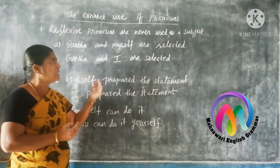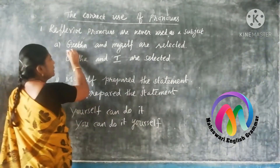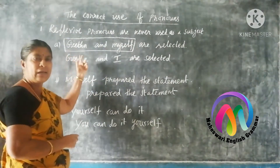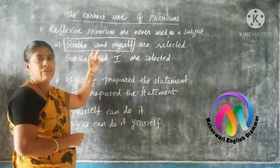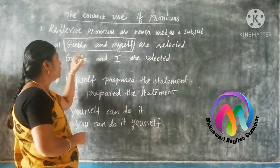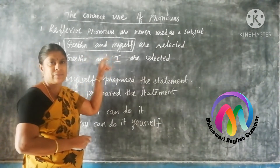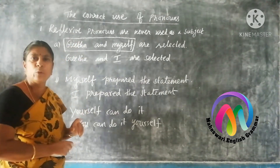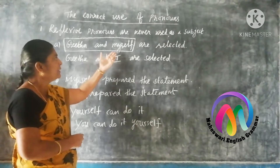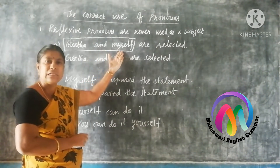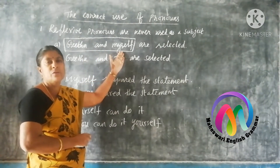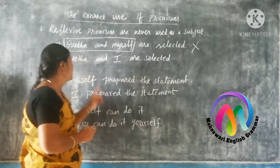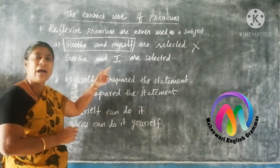Consider the sentence: 'Geetha and myself are selected.' Here, 'and' is a coordinating conjunction connecting the first and second subject. But reflective pronoun is never used as a subject, and here the word 'myself' is in the place of subject. So it is wrong. We should not use it like this.